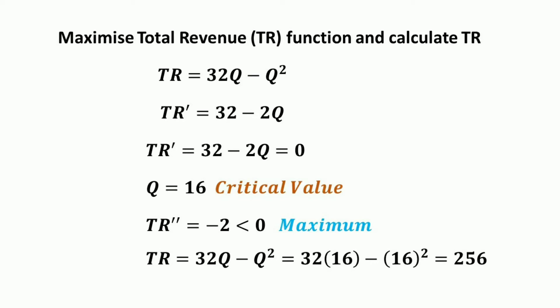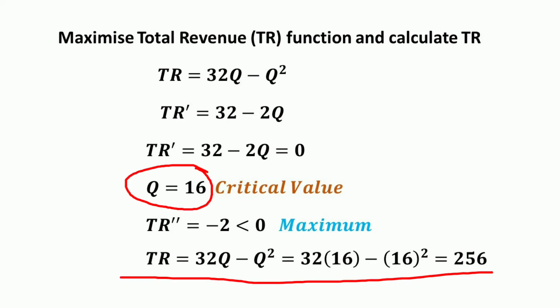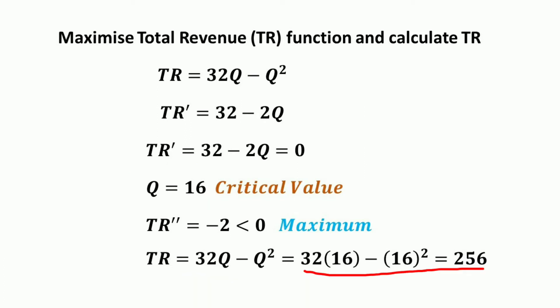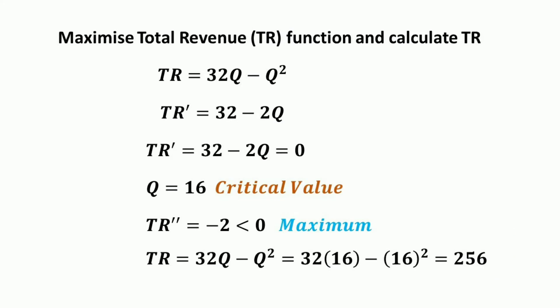To find the maximum total revenue, substitute q = 16 into the TR function: TR = 32(16) - 16² = 512 - 256 = 256. So the maximum total revenue is 256. We can also note that the second derivative is negative over the whole domain, so the function is strictly concave and the maximum is a global maximum.